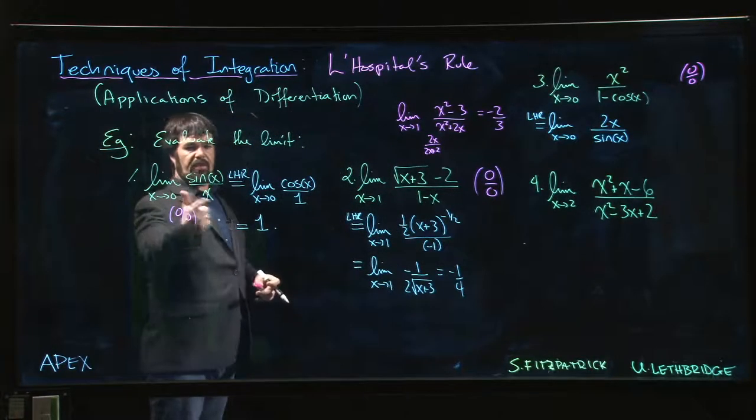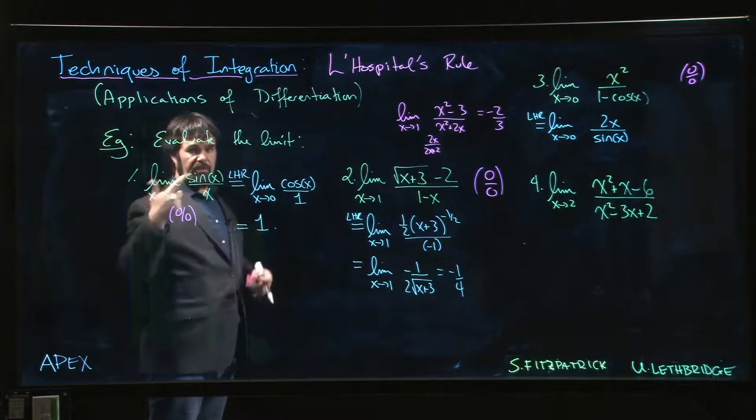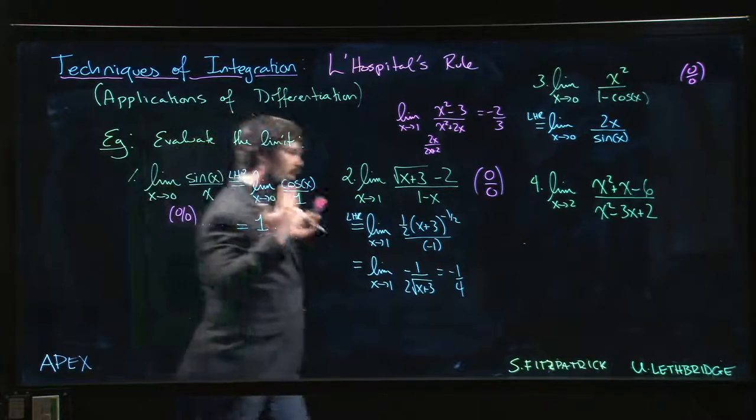I mean, we did it for sin x over x here, and if you take the reciprocal, you get 1 over 1, still 1, so we know the limit is 2.